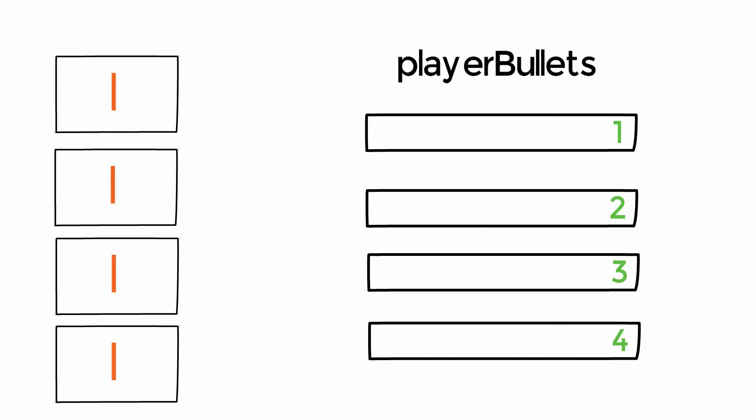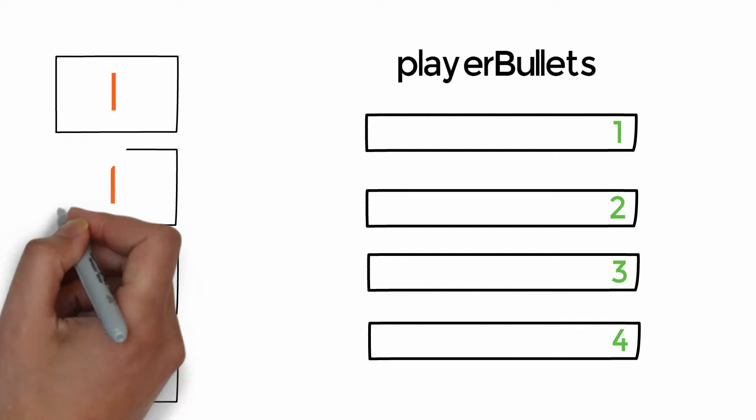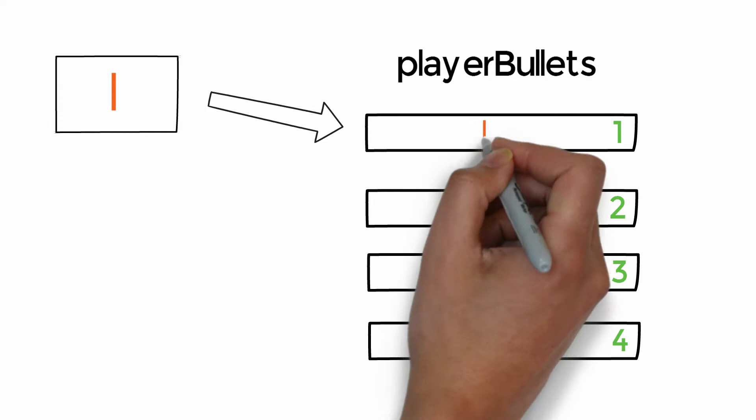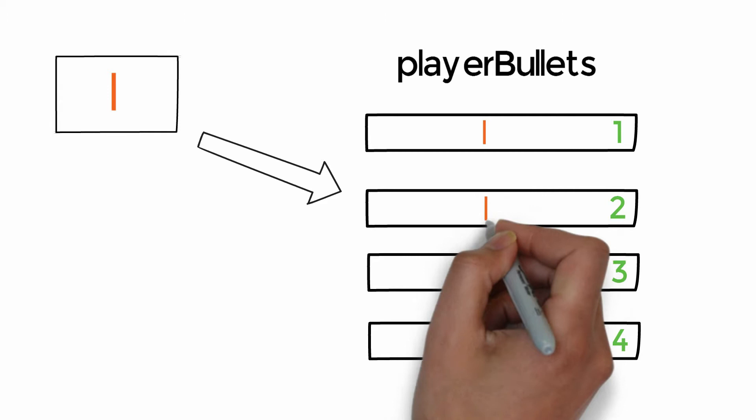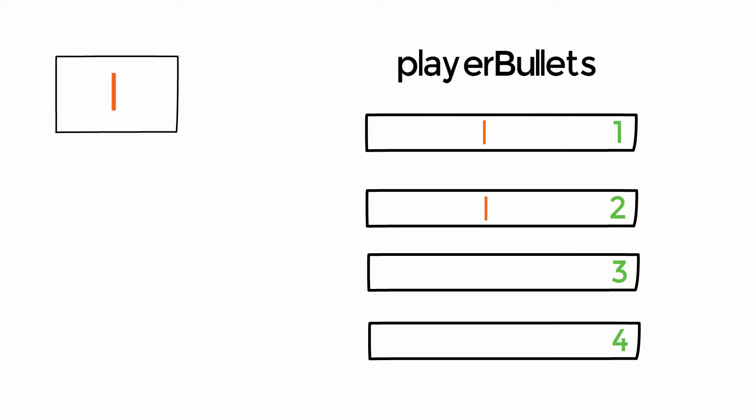In our example we'll create four numbered slots — slots one to four. If you've worked with other programming languages, you may have seen that arrays often start at position zero, so they'd go from zero to three. But in Lua it's more common to start at position one, so that's what we'll do. We create slots one, two, three, and four. We create a bullet object and put it into slot one, then create another bullet object for slot two, and repeat for slots three and four. We end up with our player bullets array containing four separate bullets — exactly what we wanted.